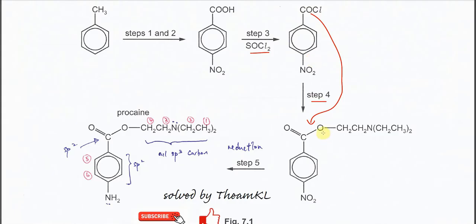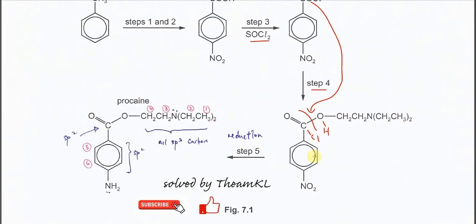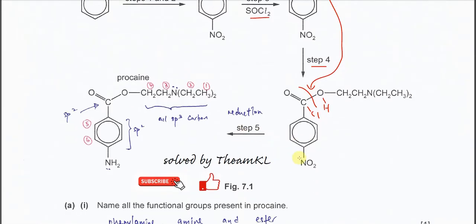The alcohol is this structure — we add one H here to get the alcohol group. This alcohol reacts with the acyl chloride. Then after this compound forms, it will undergo step 5. The change is the nitrobenzene group converting to phenylamine — so this is a reduction of nitrobenzene to phenylamine.